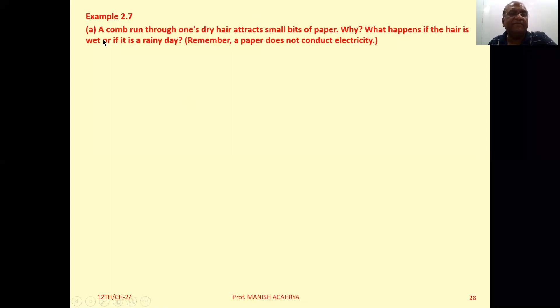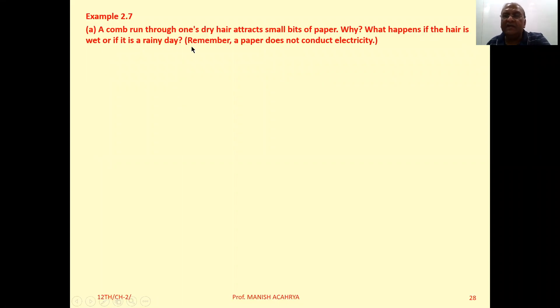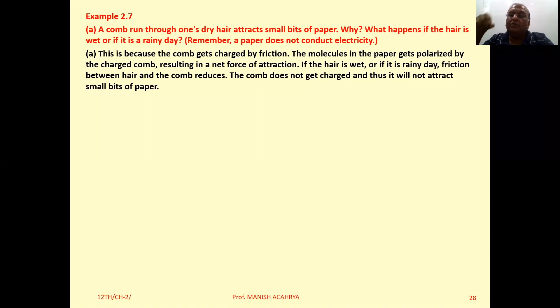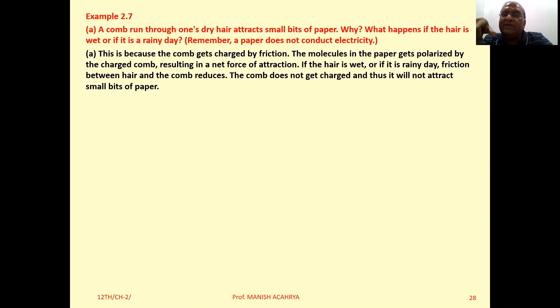Example 2.7A: A comb run through dry hair attracts small bits of paper. This is because friction causes an electric charge to be induced on the comb. This charged comb then attracts the uncharged paper by polarizing its molecules, creating an attractive force.